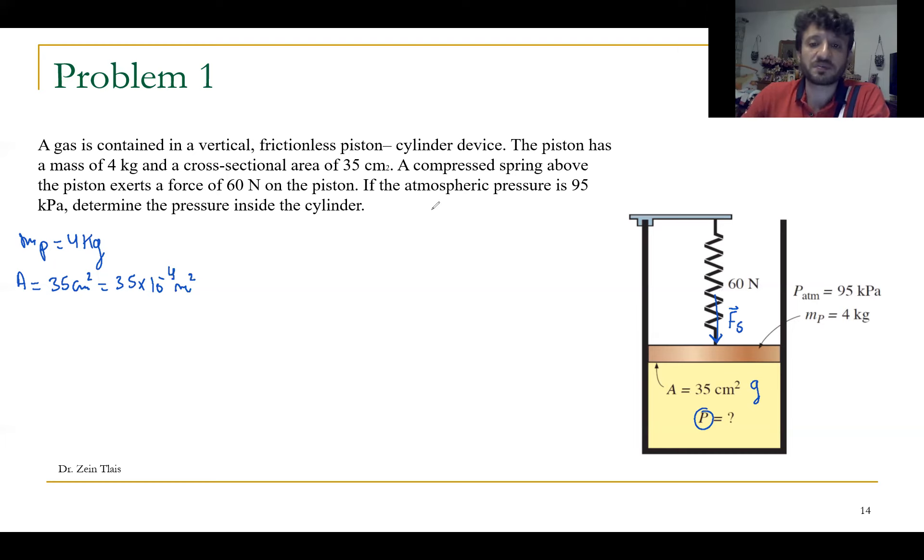We have the atmospheric pressure P_0 or P_atm equals to 95 kilopascal.